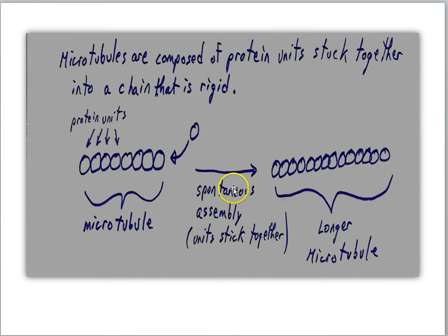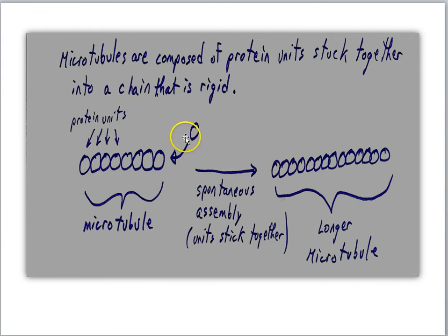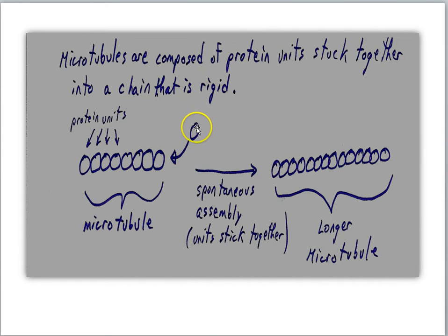They will do so spontaneously, so that if each of these subunits is floating around in the cytoplasm and bumps into another microtubule that is already forming this rod, it will stick. When subunits bump into an already-formed microtubule, the microtubule gets longer.